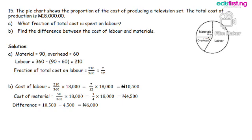Part B: Cost of labor equals 210 all over 360 multiply by 18,000. That will give us 7 over 12 multiplied by 18,000. That will give us 10,500 Naira.